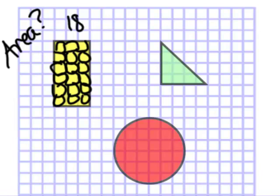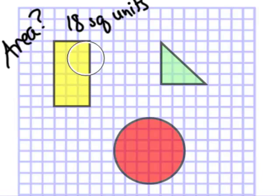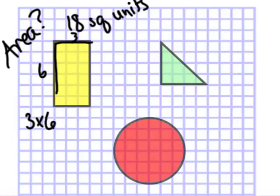So this is 18 square units. You're looking at me thinking there's a much easier way to do that. Absolutely. We can find that area by just multiplying, right? 3 this way, 6 that way, so 3 times 6 gives us 18.